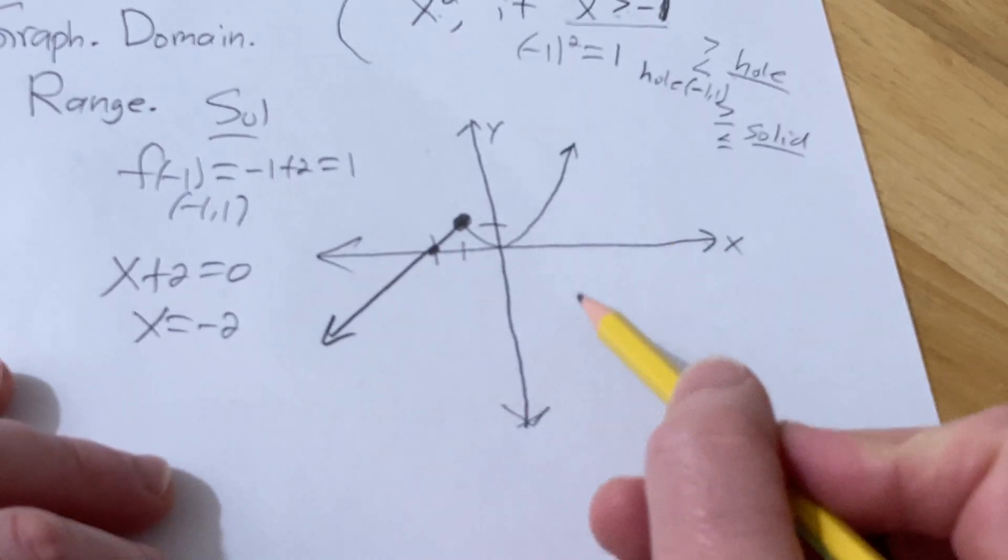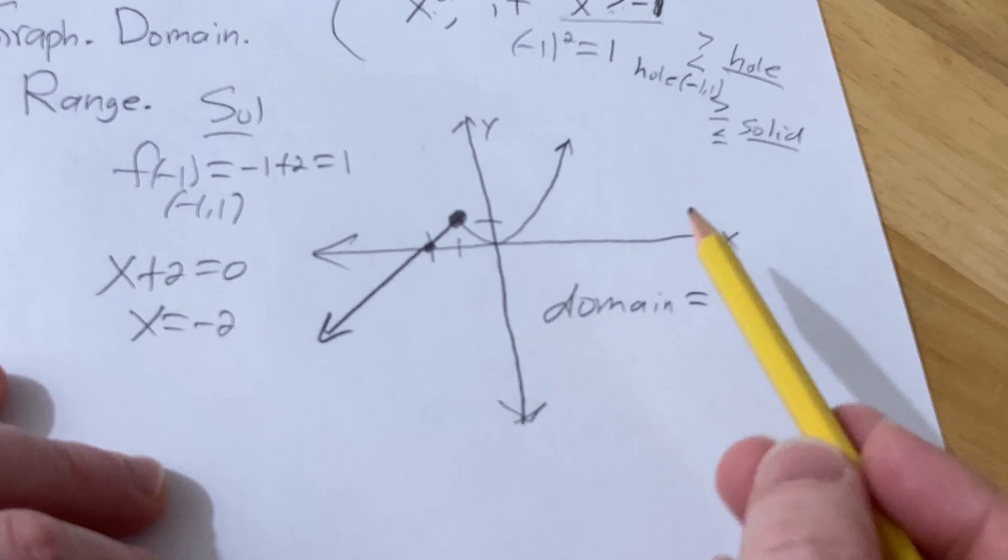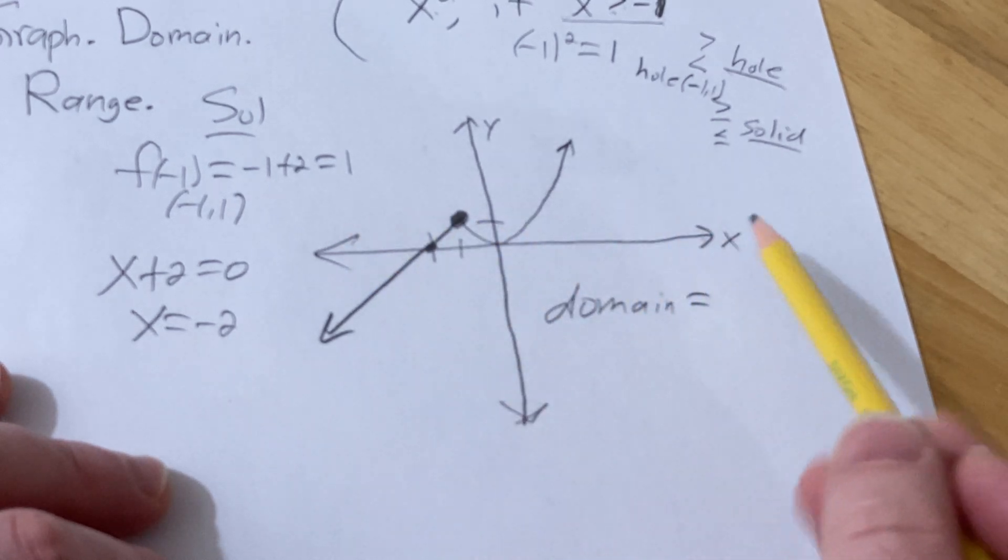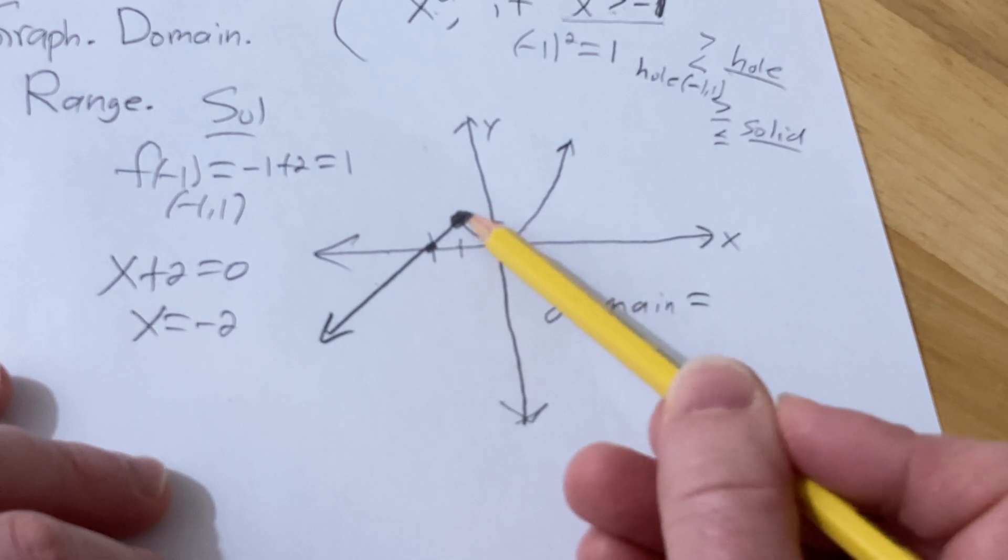As far as the domain, the domain is the set of all x-values that will give you y-values. If I pick an x-value here, I have a y-value. Pick an x-value here, I have a y-value.